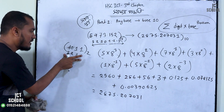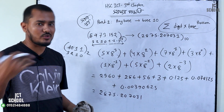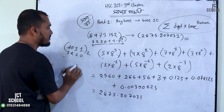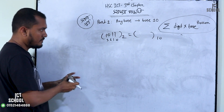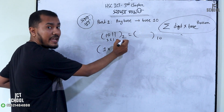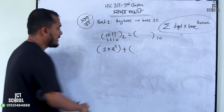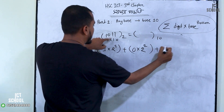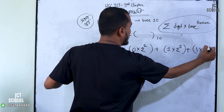You can do it. Now for base 2: the digit into base 2 — when we select base 2, position is 3. Plus, the digit is 0 into 2 squared, position 2. Plus 1 into 2 to the power 1. Plus 1 into 2 to the power 0.